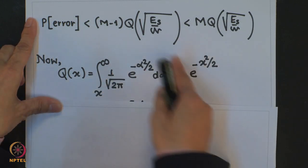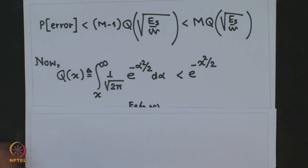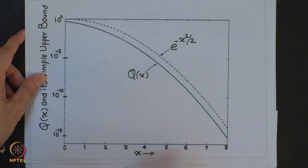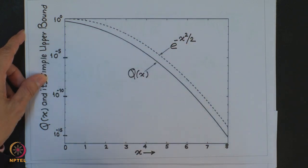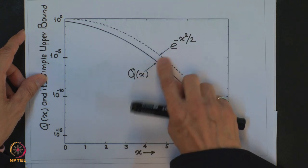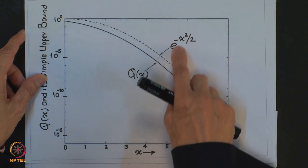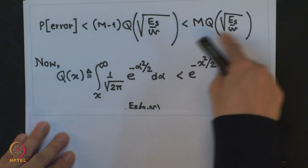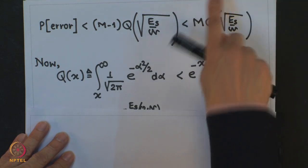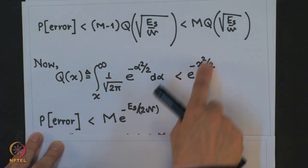The Q function is defined by a standard integral expression. We can approximate Q(x) by the upper bound e^(−x²/2), as shown in the plotted comparison of Q(x) and e^(−x²/2) versus x — the exponential serves as a valid upper bound. Substituting this upper bound for Q(x) in the error probability expression, we get an exponential upper bound for the probability of symbol error.